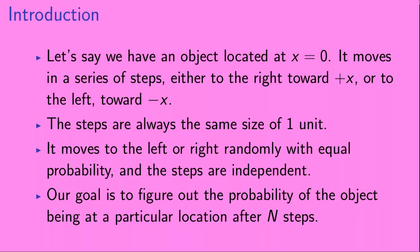Let's say we have an object located at x equals zero. It moves in a series of steps, either to the right toward plus x, or to the left toward minus x. The steps are always the same size of one unit. It moves to the left or right randomly with equal probability, and the steps are independent. Our goal is to figure out the probability of the object being at a particular location after n steps.